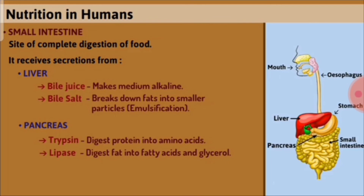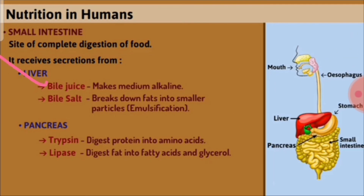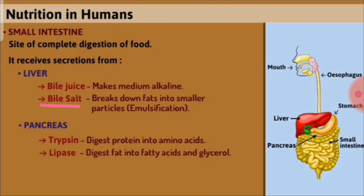The next digestion occurs in the small intestine, where complete digestion of food takes place. The small intestine receives secretions from the liver and the pancreas. The liver secretes bile juice, which is alkaline in nature, and neutralizes the acidic content received from the stomach. The main role of bile salts is emulsification of fat — breaking down fat into smaller particles.